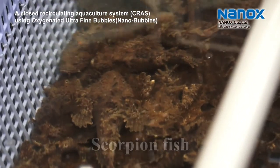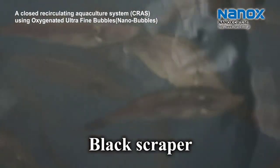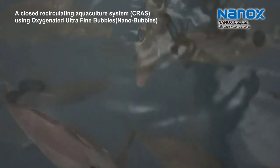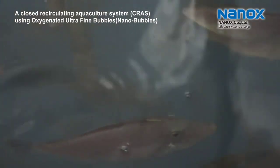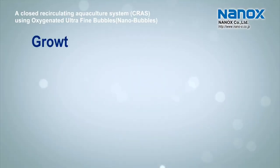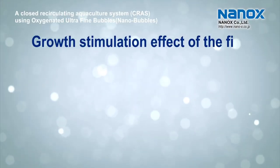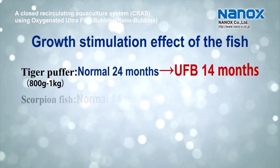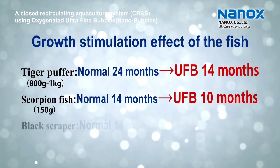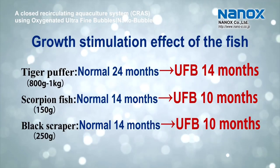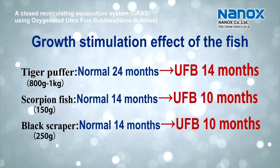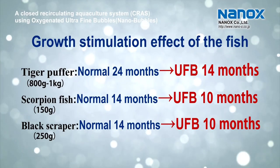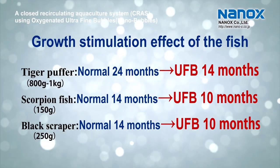There have been no adverse effects such as gas bubble disease or other fish diseases. In addition, it is noteworthy that the growth period has been reduced. At the present growth rate of fish, it is expected that tiger puffer will reduce its growth time by ten months, and scorpion fish and black scraper will reduce by four months. Reducing the growth period will give clear benefit to fish farmers suffering from low profitability.